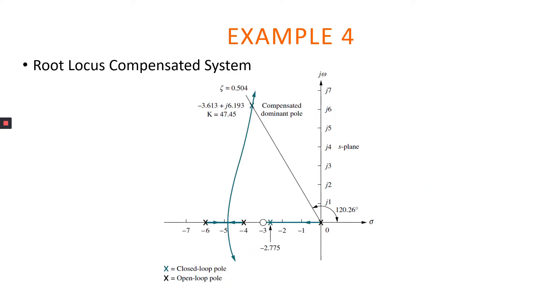So this is the root locus compensated system where we have our open loop poles from the uncompensated open loop transfer function as equal to 0, negative 4, and negative 6. For PD compensator, we have ZACC equal to negative 3.006.